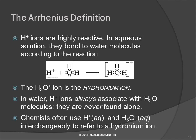Those hydrogen ions are very reactive. Let's think about what a hydrogen ion is. Start with a hydrogen atom — it has one electron and one proton. If we make an H+ ion, we do that by getting rid of the electron. What's left? A proton. A hydrogen ion is exactly the same thing as a free proton.